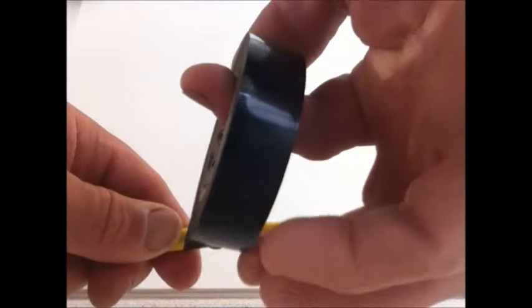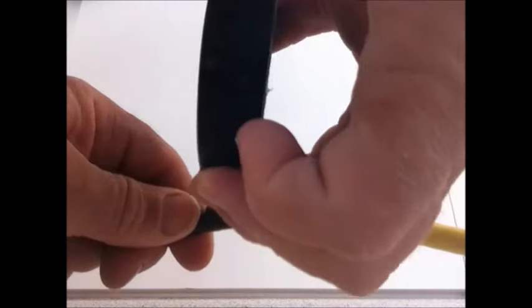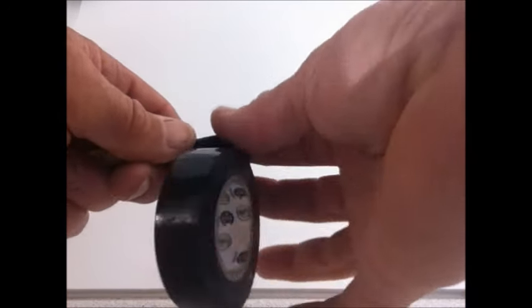So when you're taping up an outer jacket like this, you want to start with your electrical tape nice and close to the repair. Make sure that that outer jacket is pushed down, tape over the damage.